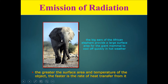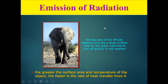An elephant has big ears for many reasons, but one is that they provide a large surface area for the giant mammal to cool off quickly in hot weather. This large surface area of the ears allows for better emission of radiation — the greater the surface area, the faster the rate of heat transfer. Also, if the temperature of the object is higher, it has a bigger difference from the environment, so the rate of heat transfer from it would also be faster.